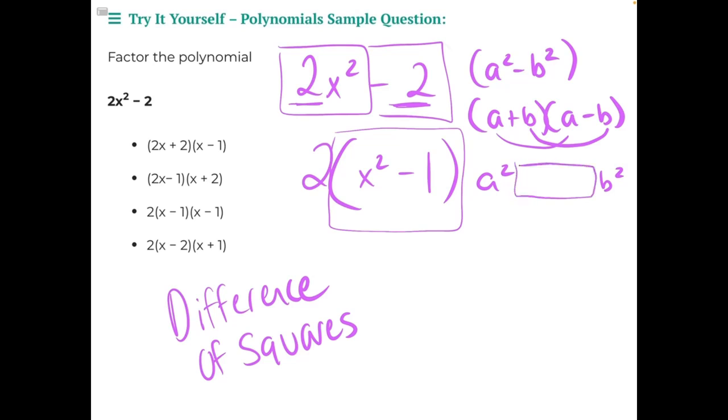And then what would happen in the middle here is you would have a positive b times a, and then a negative a times b. So you'd have negative ab and then positive ab. And those would just cancel each other out, leaving behind the a squared minus b squared.